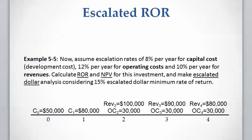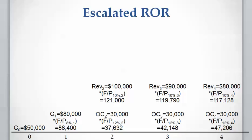Because we have different escalation rates for costs and revenue, we need to keep them separate. The present time capital cost is not affected by the escalation rate. The $80,000 capital cost at year one must be compounded at 8% for one period. The $100,000 revenue at year two is compounded at 10% for two periods. The operating cost at year two is compounded at 12% for two periods, and so on — with compounding periods of three and four for later years.